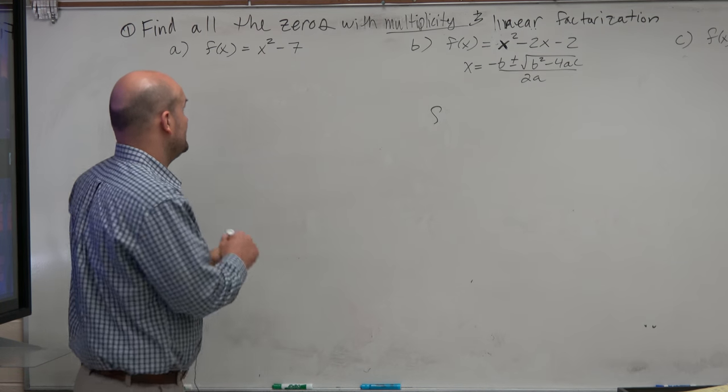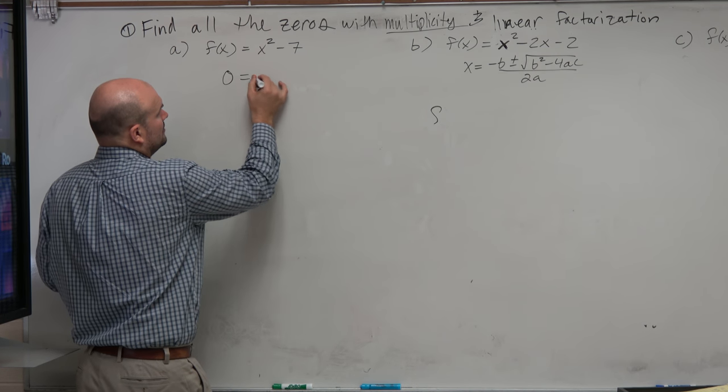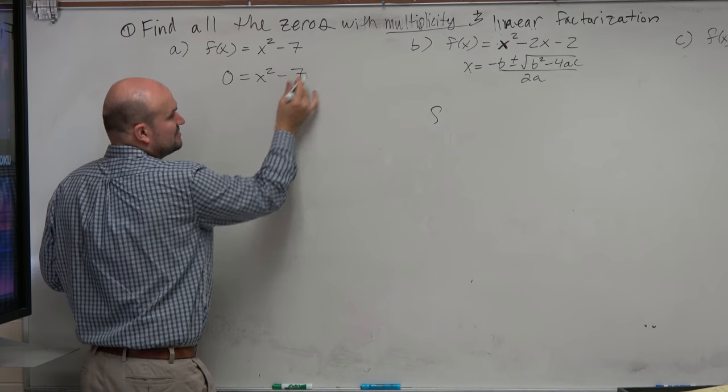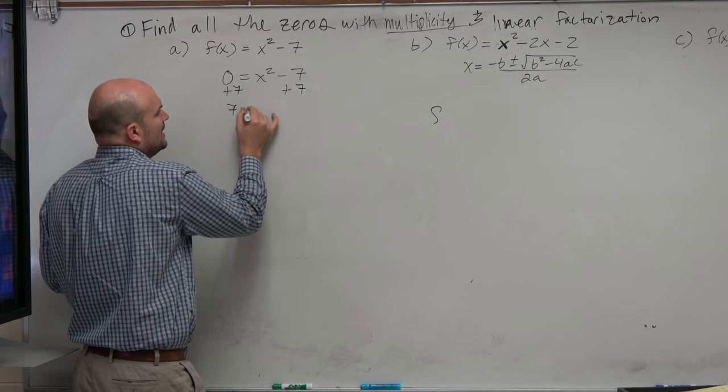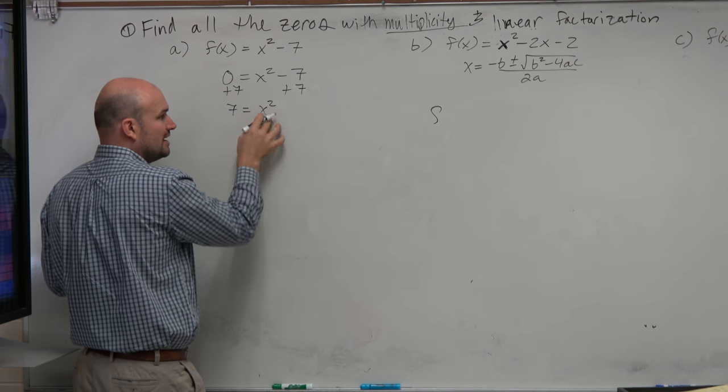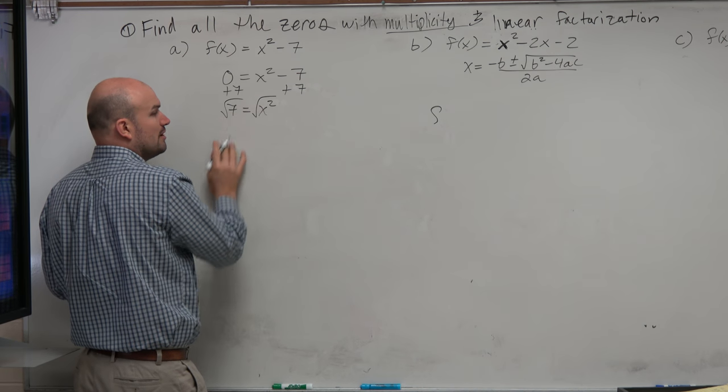So another technique is, if we set this equal to 0, we realize we actually don't need to use factoring. We can use the square root method. So if I add 7 to both sides, I get 7 equals x squared. And then I can undo squaring by introducing the square root.